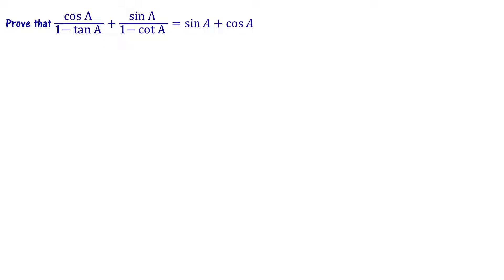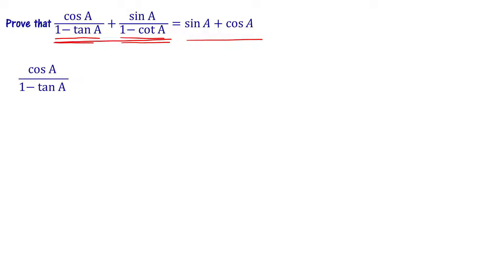Prove that cos A divided by 1 minus tan A, plus sin A divided by 1 minus cot A, equals sin A plus cos A. Let us start simplifying term by term. The first term is cos A divided by 1 minus tan A.